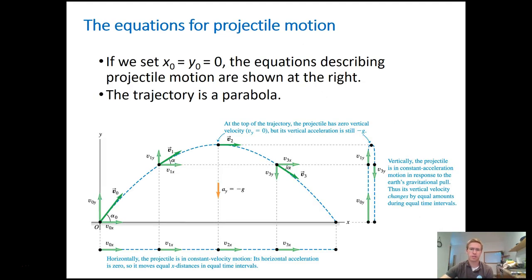Thinking about projectile motion: it's the term we give to something that, while it may have an initial velocity, the only acceleration it experiences is a result of the acceleration due to gravity. We know the acceleration due to gravity is straight down, with a magnitude of 9.8 meters per second squared — negative because it's down.